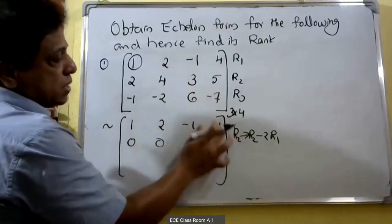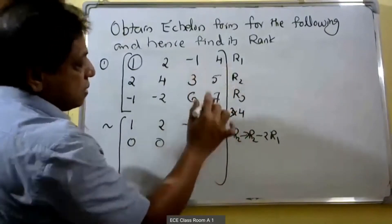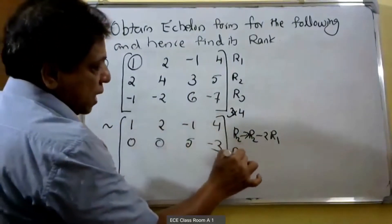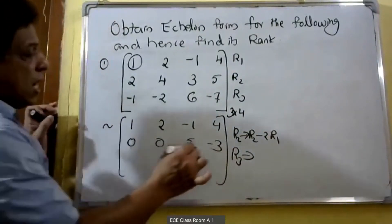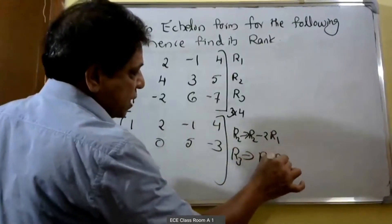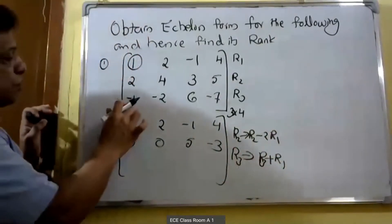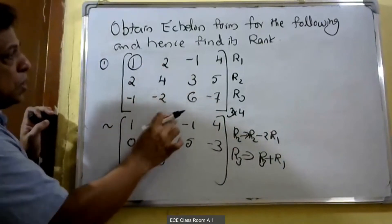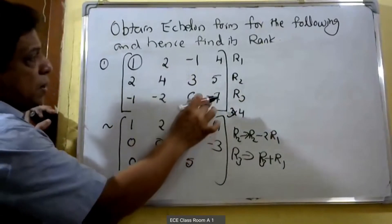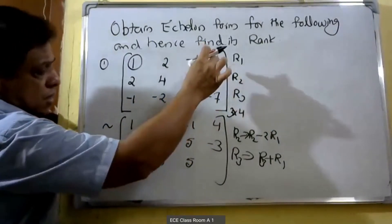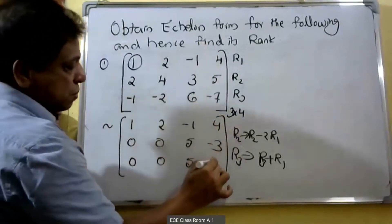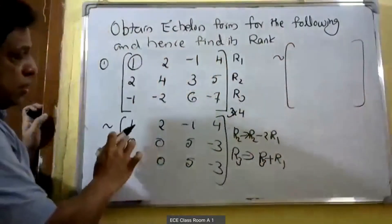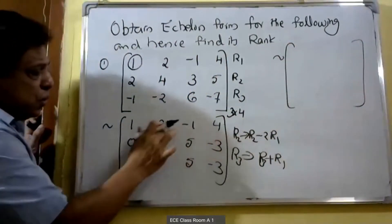Continuing R2: 3 minus 2 equals 5, 5 minus 2 equals minus 3. Then for R3, R3 changes to R3 plus R1: minus 1 plus 1 equals 0, minus 2 plus 2 equals 0, 6 minus 1 equals 5, minus 7 plus 4 equals minus 3.